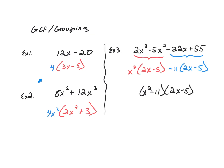In this first section I'm going to review greatest common factor and grouping. In example 1 we have 12x minus 20. We can factor this polynomial by taking out the greatest common factor of 4.